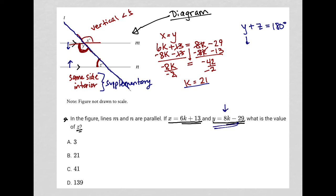Because Y, based upon what the question told us, is 8 times K, or 8 times 21, minus 29. 8 times 21 is 168. 168 minus 29 is 139. So that's my Y value.